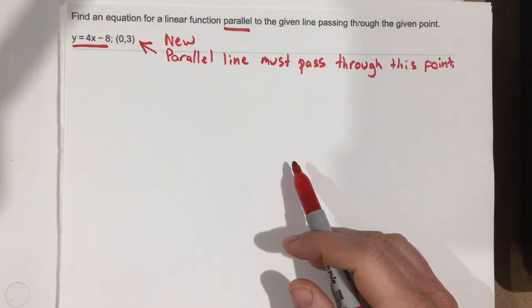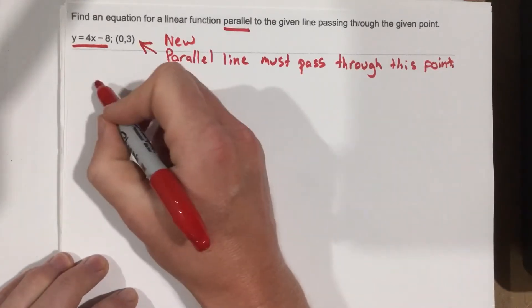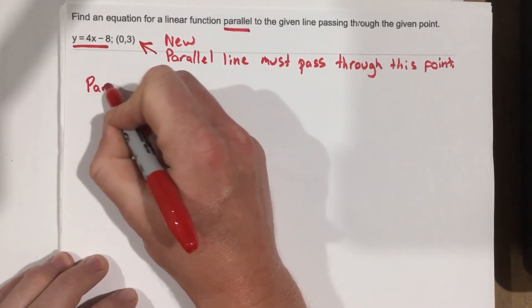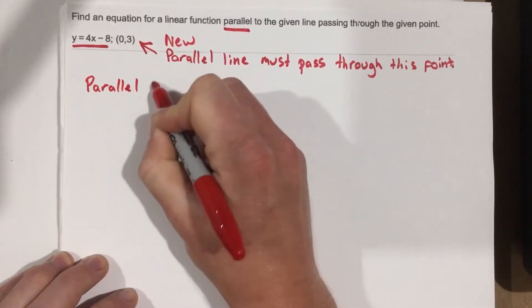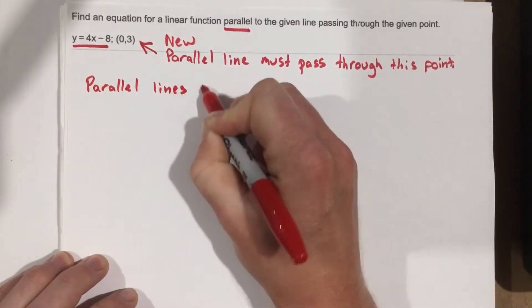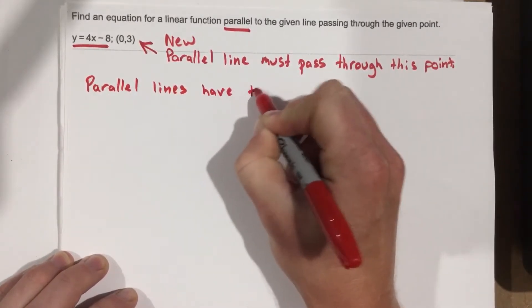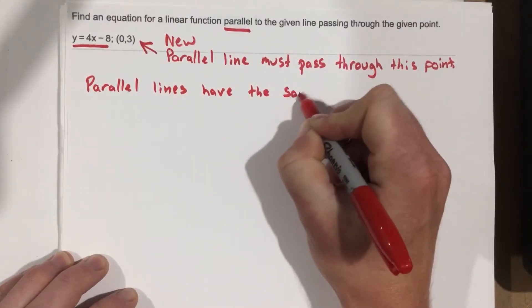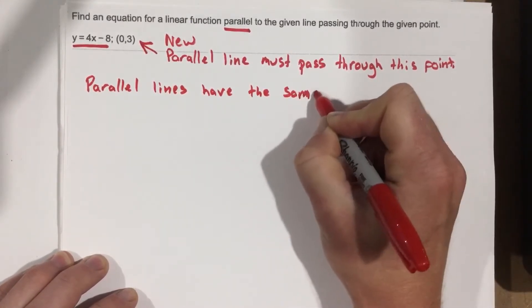So first of all, what does it mean to be parallel? We know parallel lines have the same slope.